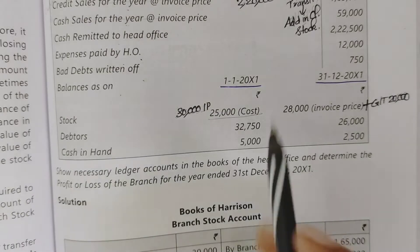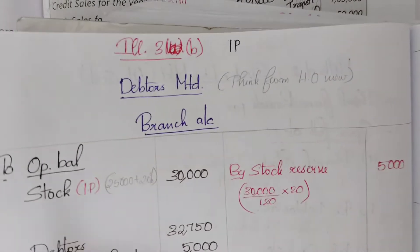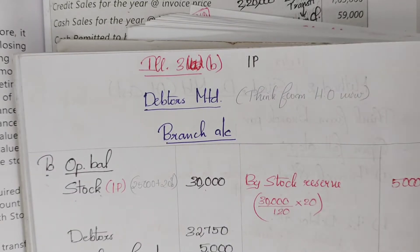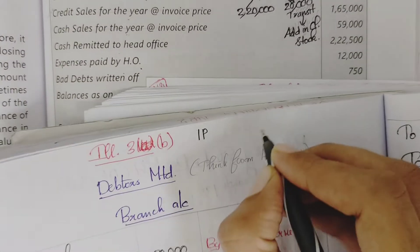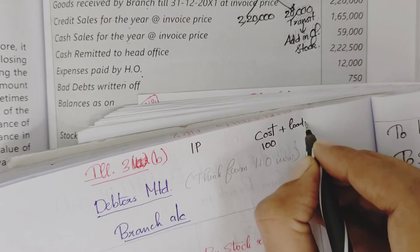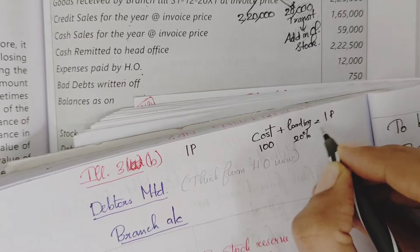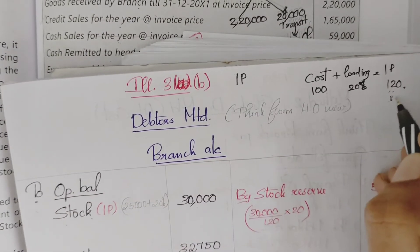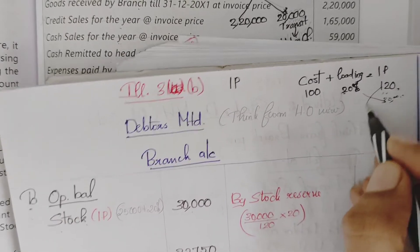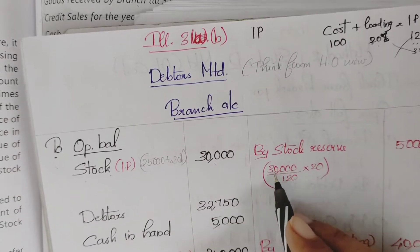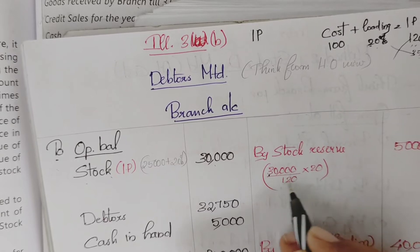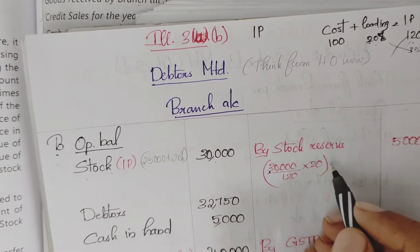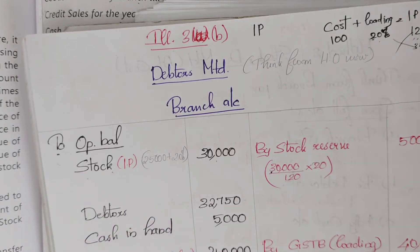Now the branch account is prepared. Opening stock: $25,000 at cost, $30,000 at invoice price. To stock at invoice price $30,000 — the unrealized profit, i.e., loading element, must be cancelled. Cost is $100, loading is $20, invoice price is $120. So opening balance loading element: $30,000 divided by 120 into 20 = $5,000 loading element cancelled. So cost portion is $25,000 and loading element is $5,000.